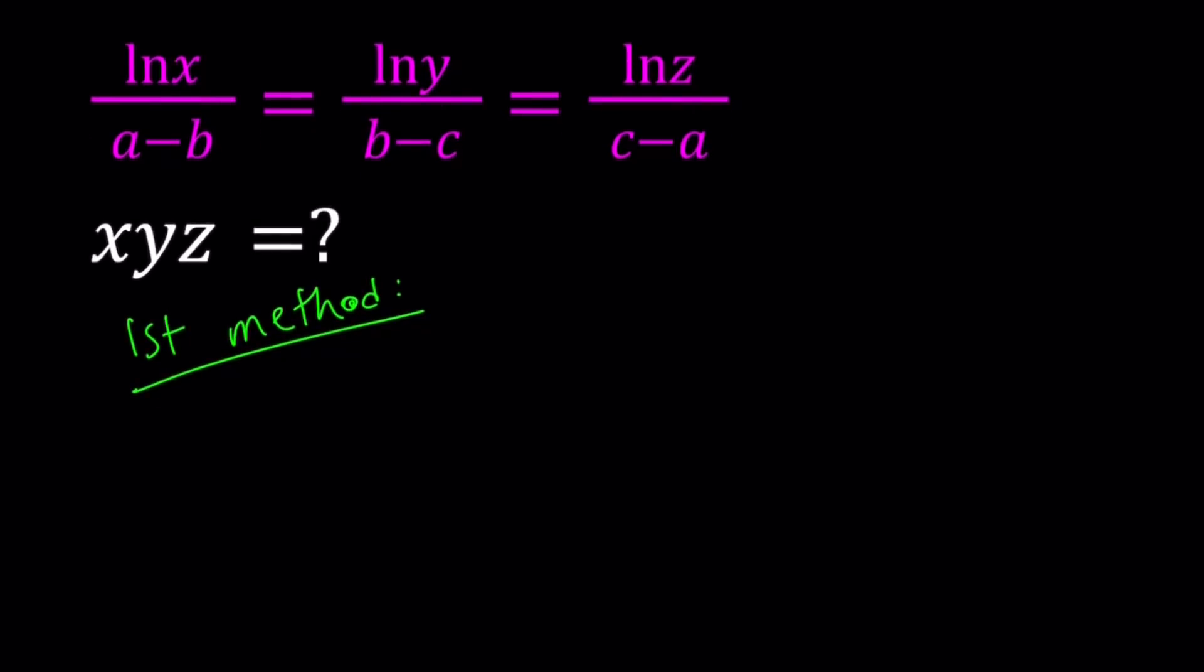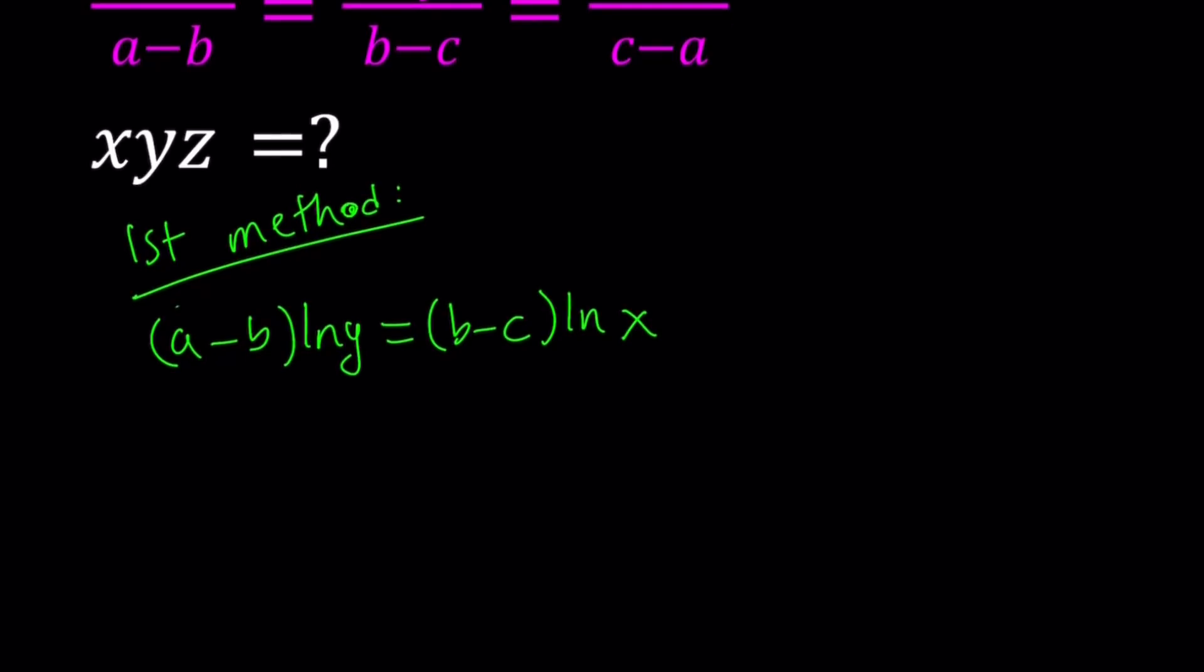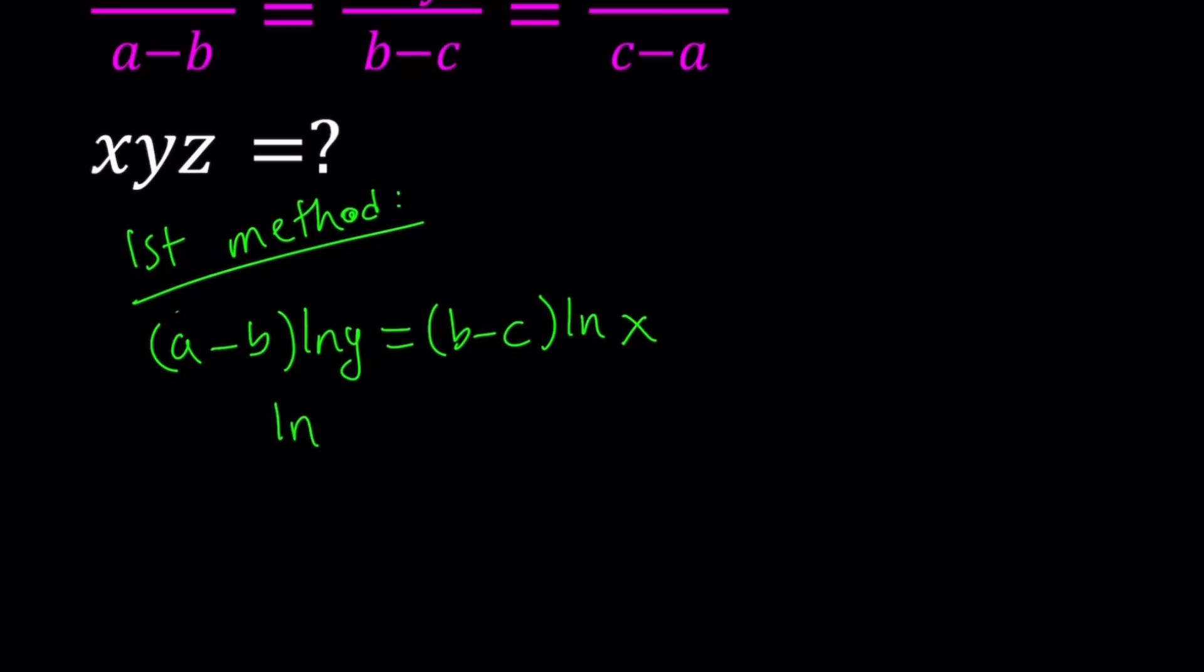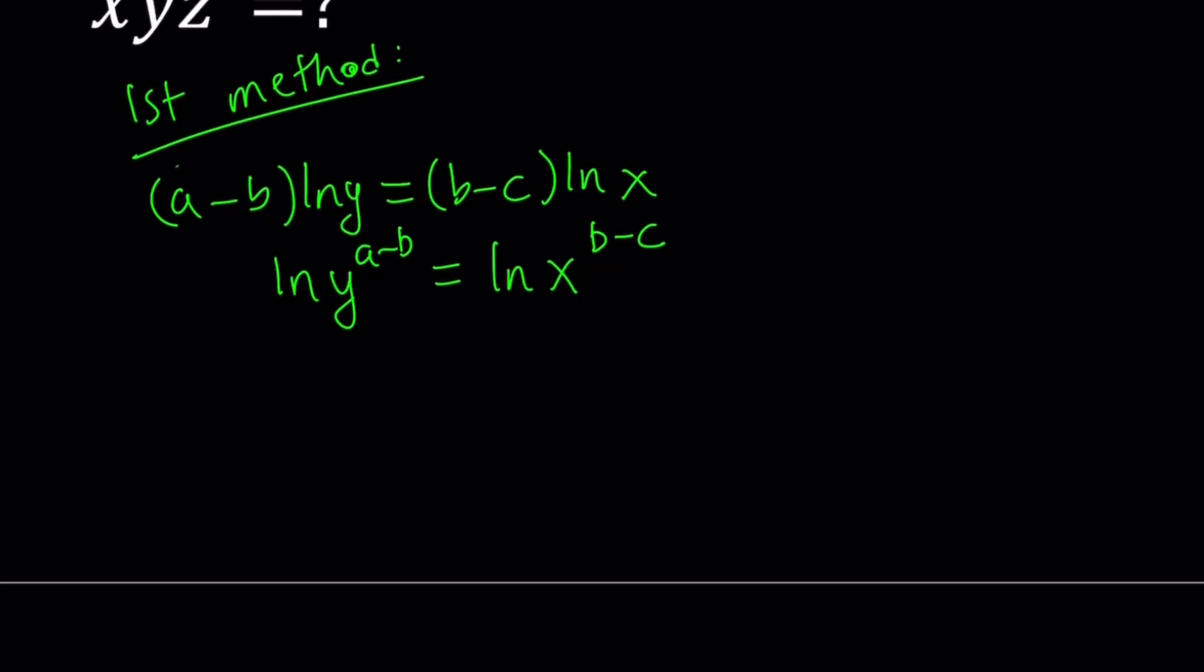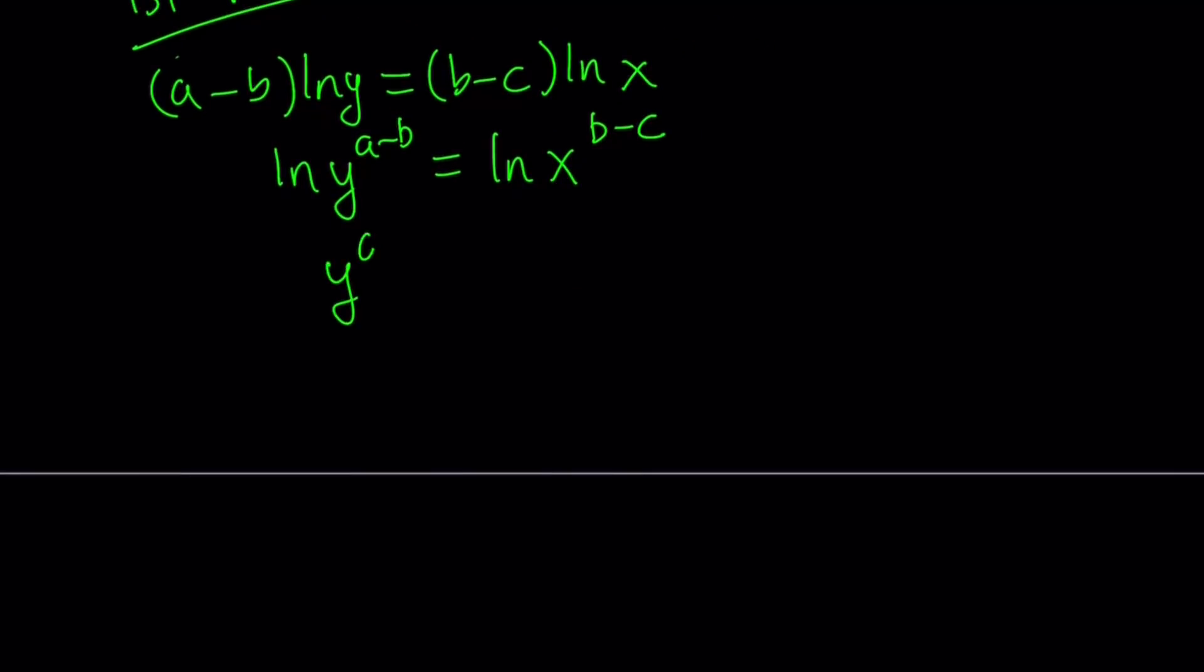So, my first method involves the following. I'm going to take two expressions at a time and cross multiply and come up with an equation from there. So, let's take the ln x and ln y together. That gives us (a-b) times ln y equals (b-c) times ln x. And then from here, we can just go ahead and move the a minus b and make them powers. So, this becomes ln y to the power a minus b equals ln x to the power b minus c. And since both sides are ln, and ln is a one-to-one function, we can safely say that y to the power a minus b equals x to the power b minus c.